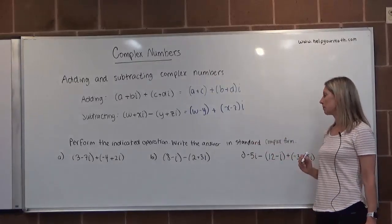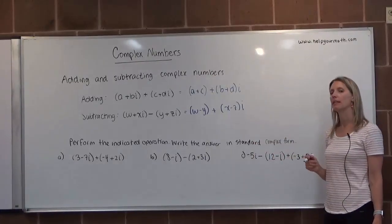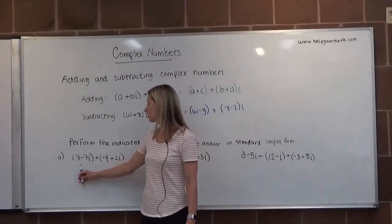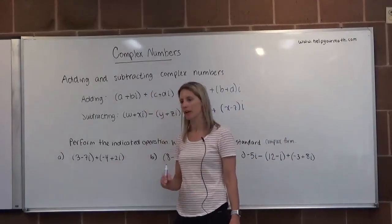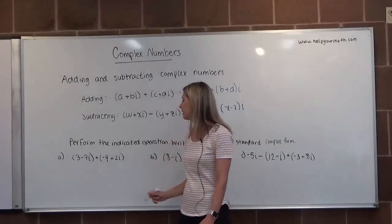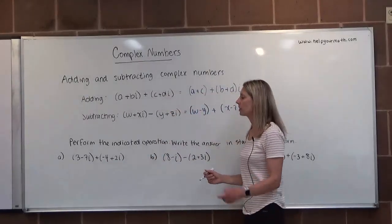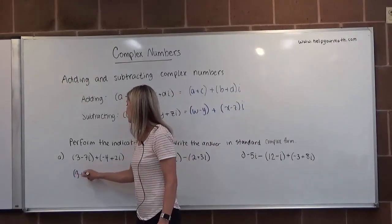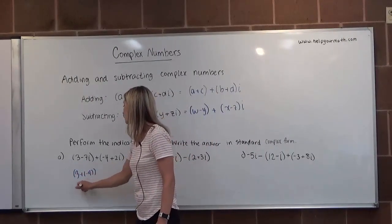Let's look at some examples. We want to perform the indicated operation, write the answer in standard complex form. So here we have our first complex number, 3 minus 7I. We're adding to it the complex number negative 4 plus 2I. So we're going to combine the real parts. That would be 3 plus negative 4. 3 plus negative 4 is negative 1.